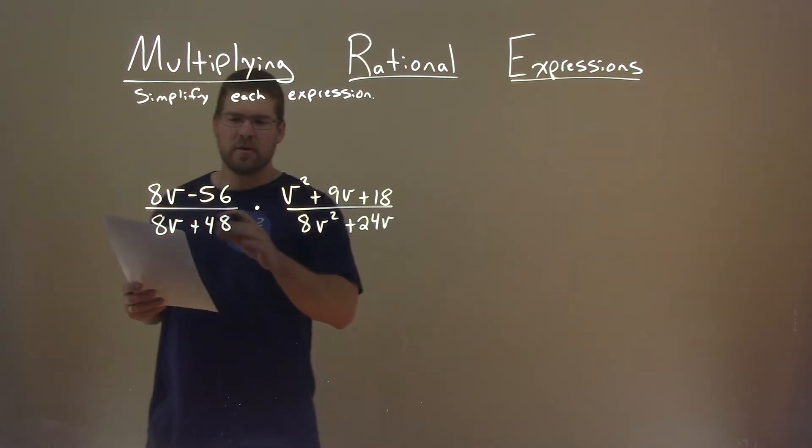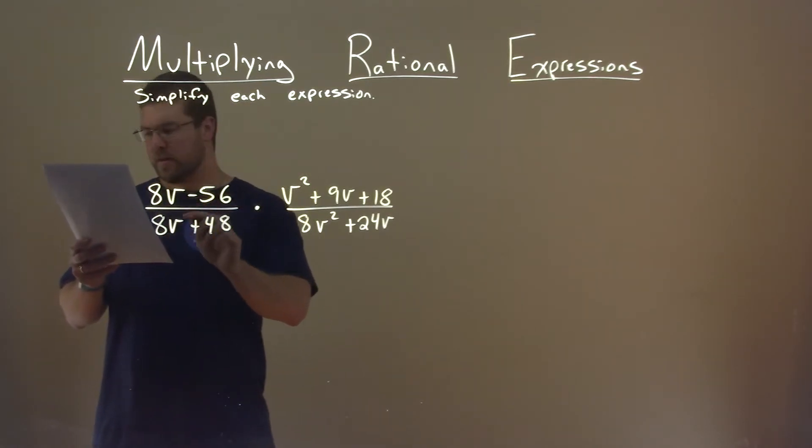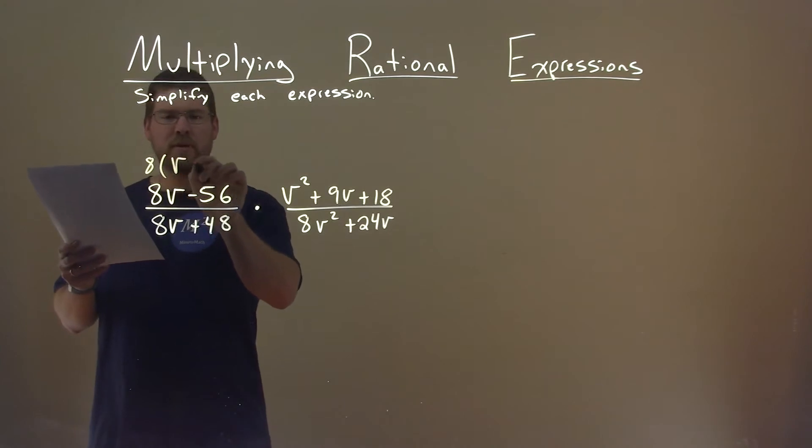Well, what I want to do is see if I can factor these out. I see an 8v minus 56, I can pull out an 8, and I'm left with v minus 7 here. So I'm going to replace that.